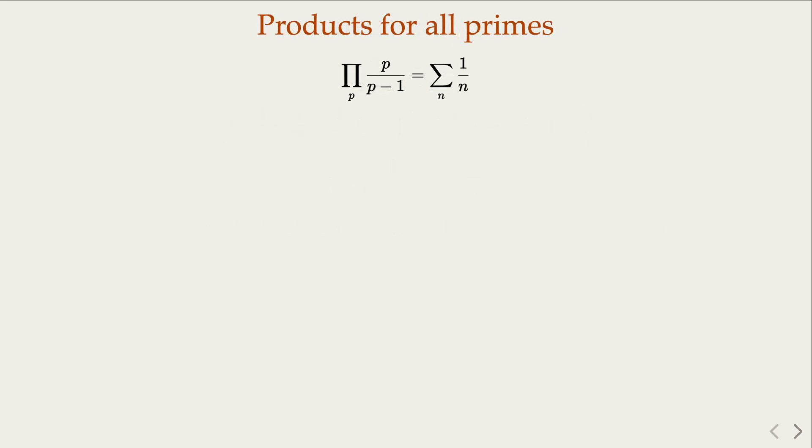So the left hand side here is a product across all the prime numbers. Each term, of course, is p over p minus 1, a finite value. And the right hand side here is going to be 1 over n. Now we claim that n contains all the natural numbers if you have p on the left hand side for all the prime numbers. Why?